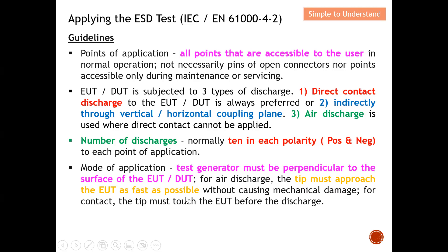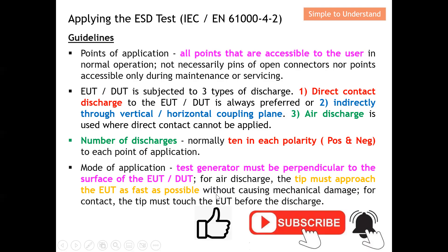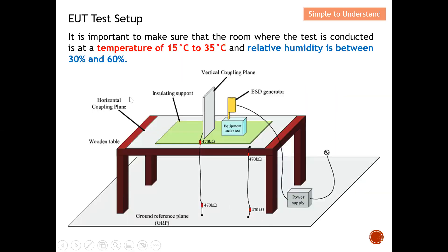For air discharge, the tip must approach the EUT as fast as possible — you cannot take your time approaching, as the discharge may occur prematurely. You need to move as fast as possible toward the EUT without causing mechanical damage. For contact discharge, the tip must touch the EUT before you execute the discharge. If you find this helpful, please like this video and subscribe to this channel.